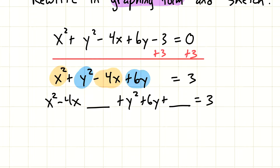The next step is to reorganize this so we have x squared minus 4x together and y squared plus 6y together, with spaces for the missing numbers. Whatever we add to the left side, we're going to add to the right side as well.